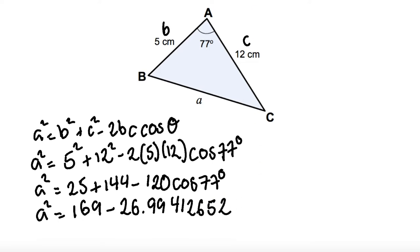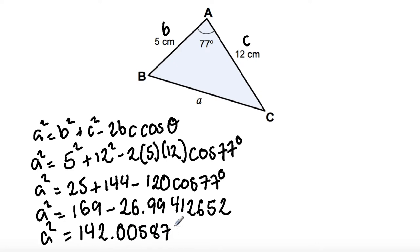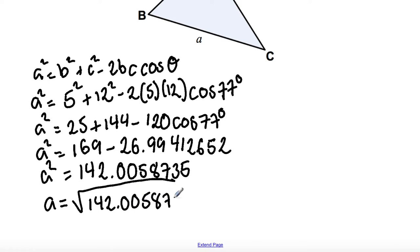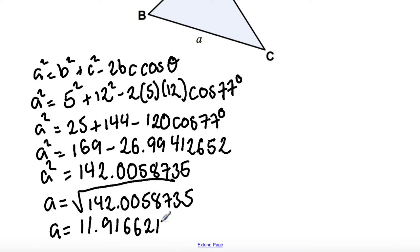Now, 169 minus 26.99412654 gives us A squared equals 142.0058735. To find the value of A, we need to square root both sides, so A is equal to the square root of 142.0058735, which gives A equals 11.91662173.